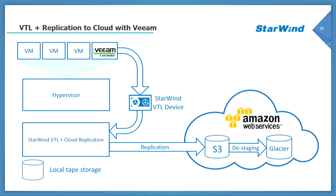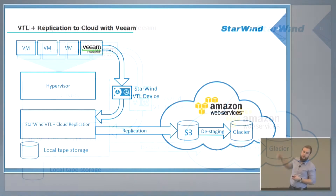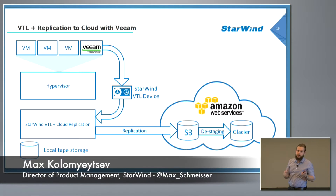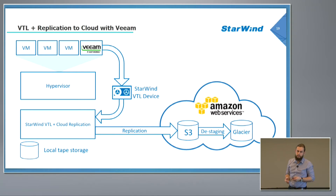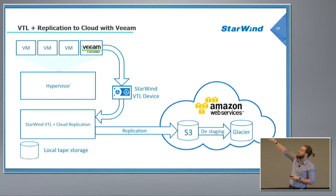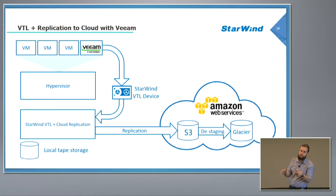The idea is to have a disk-to-disk-to-cloud implementation rather than disk-to-disk-to-tape, and these two can be combined as well. We have virtual machines running on a hypervisor with Veeam and Starwind VTL connected to that Veeam machine, presenting a regular tape library. As tapes get backed up to the Starwind machine, it will have local tape storage — not actual tape, just spindles — but a certain amount of tapes stored locally.